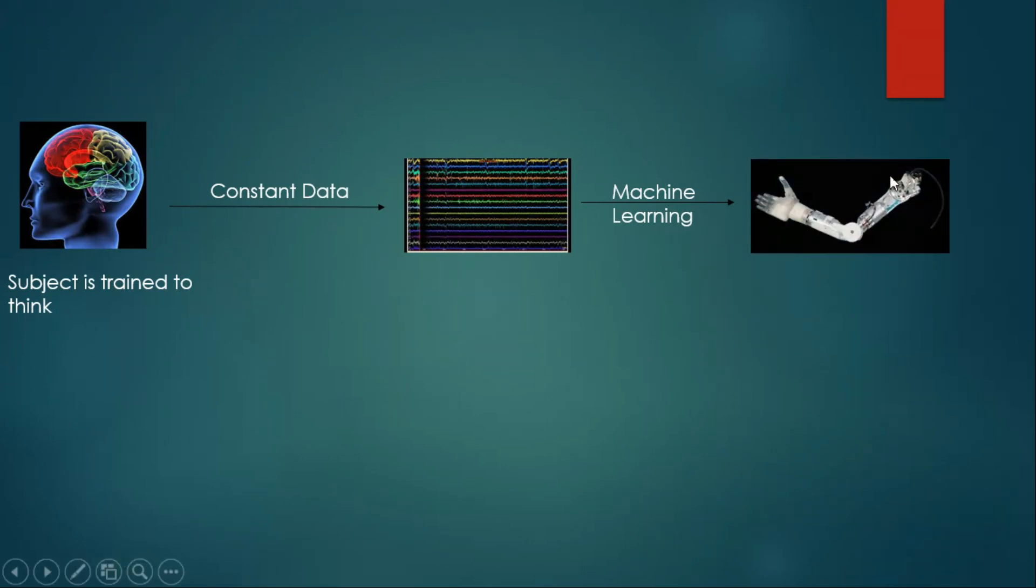Now whenever this graph or this curve is received by this arm, then this arm starts moving. So it's a direct connection now. If a subject thinks about moving an arm, his prosthetic arm will move as well.